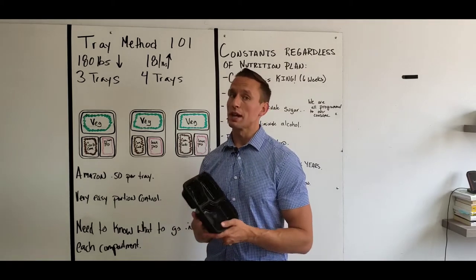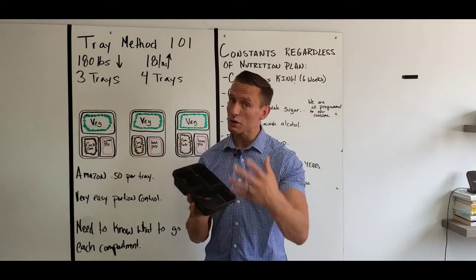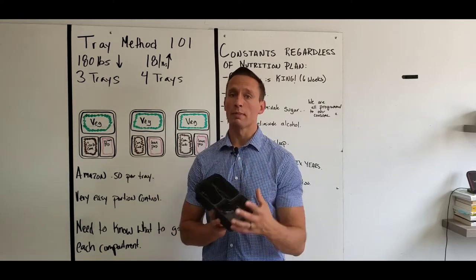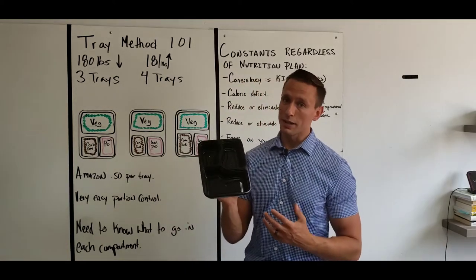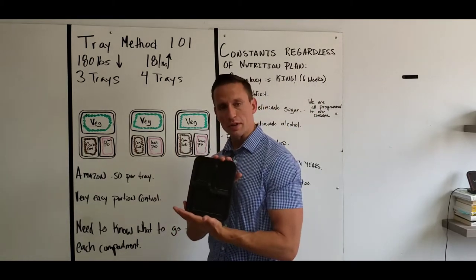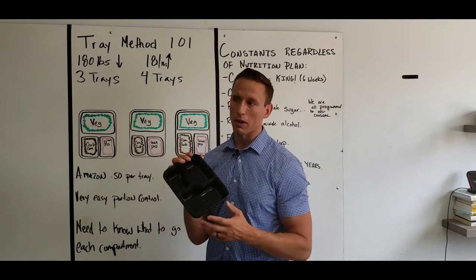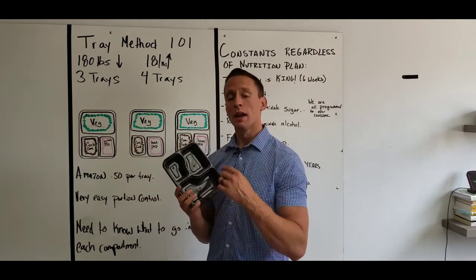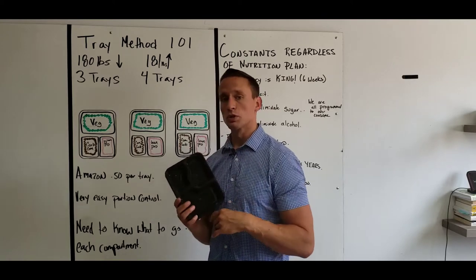The tray method is the opposite. The tray method is not super precise. It can still produce good results, but we have to remember we're not going to be weighing and measuring. We're going to do some approximations. So we use these trays and let's start with this. Where can I find these trays? Don't come down to my office and take them out of my closet, right? You can find them on Amazon. They're about 50 cents per tray. I'll put the link in below so you can order them.